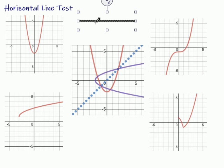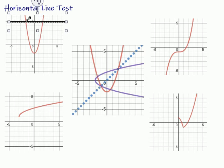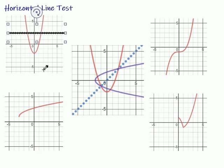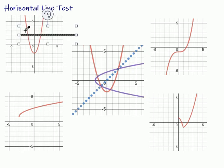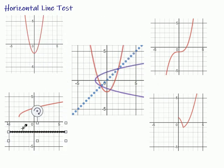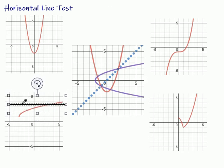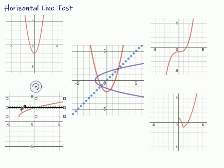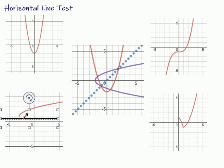Now let's take a look at these graphs and see if the inverse would indeed be a function. This one right here, we already kind of did that — the inverse would not be a function, because it fails the horizontal line test. On this one right here, we notice that the horizontal line test, even though it is kind of close and fairly flat, it's not going to fail — it's only going to touch once. So the inverse on that one would indeed be a function, because it passes the horizontal line test.